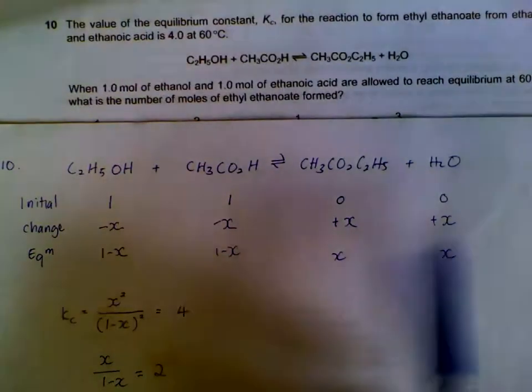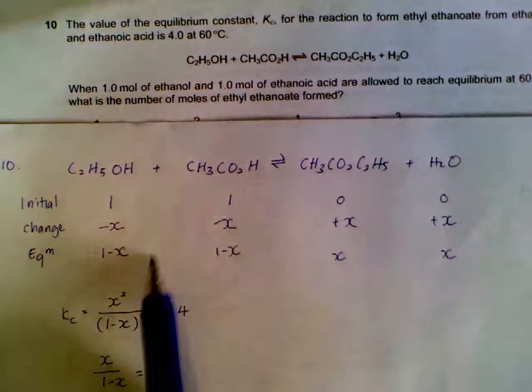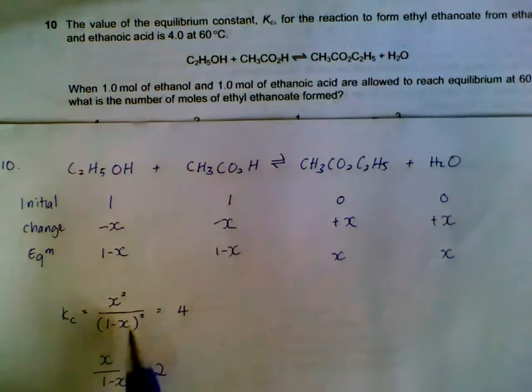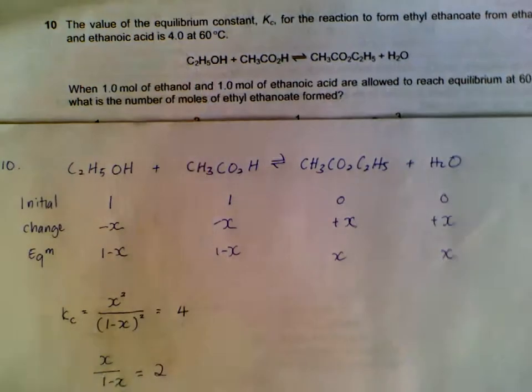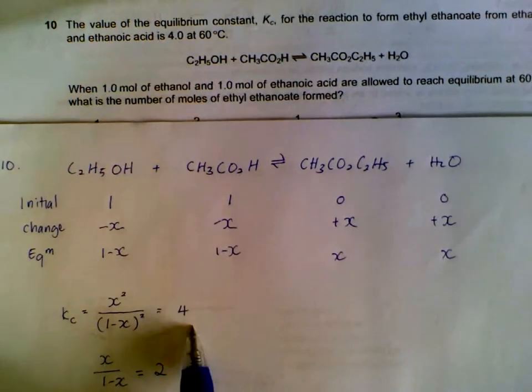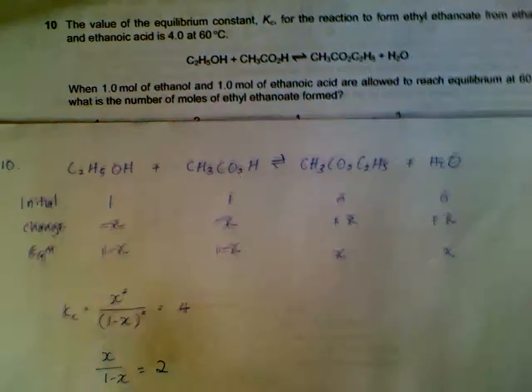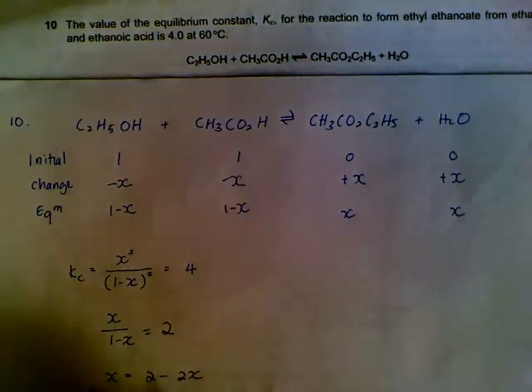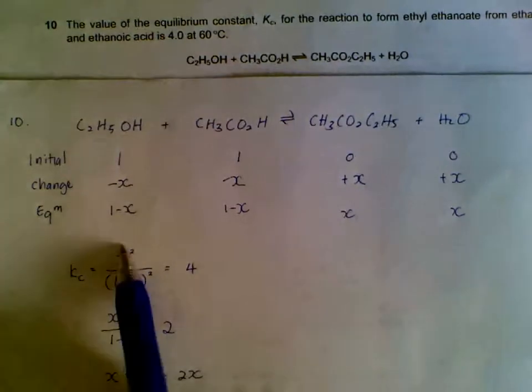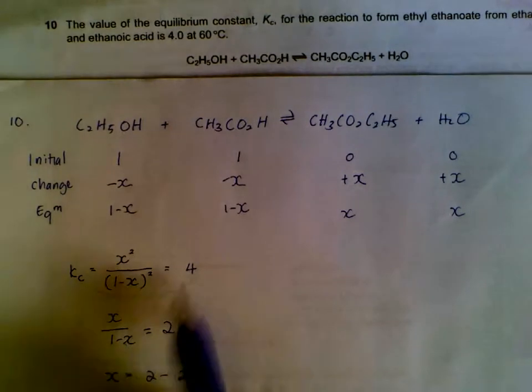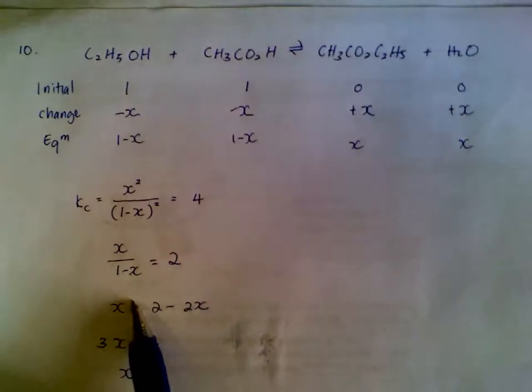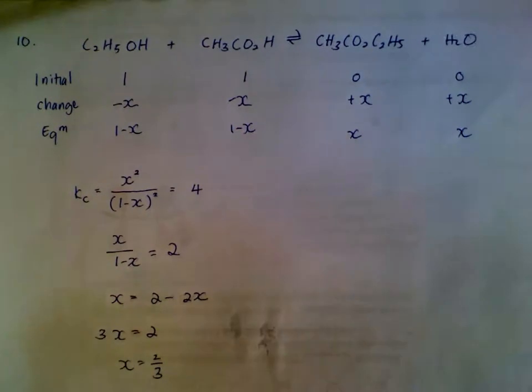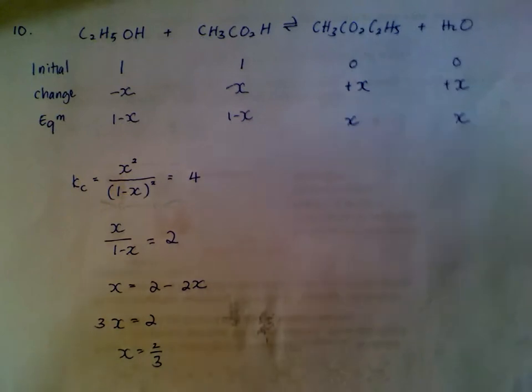We form the Kc, products over reactants. So we have x squared and 1 minus x squared. That will be equated to 4. Once we have this equation, we will get rid of the squares by taking the square root of both sides. Square root here, we get x over 1 minus x. Square root of 4, we get 2. Then we are down to a simple equation to solve for x. In the end, we will get x equals to 2/3.